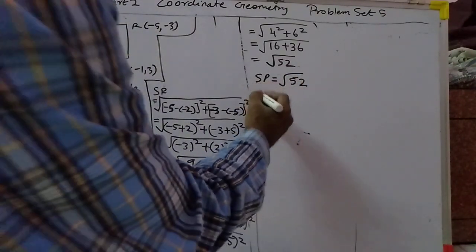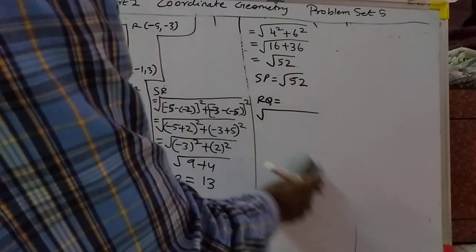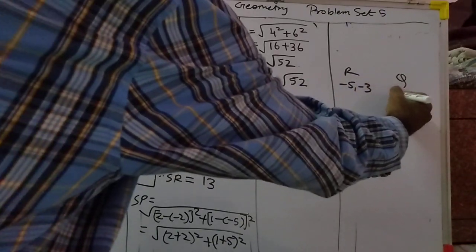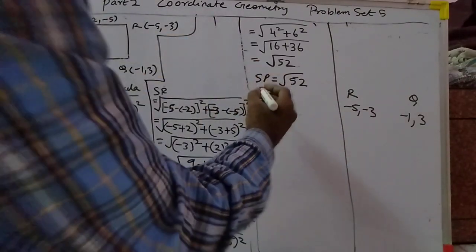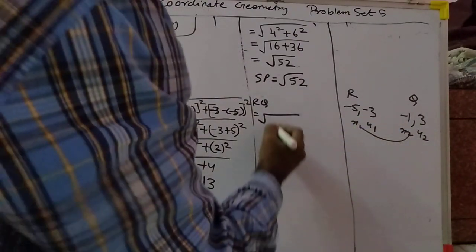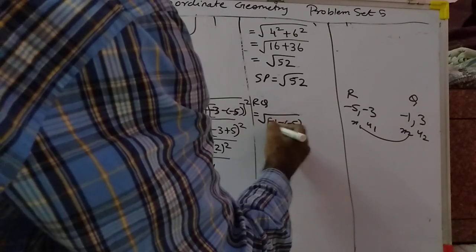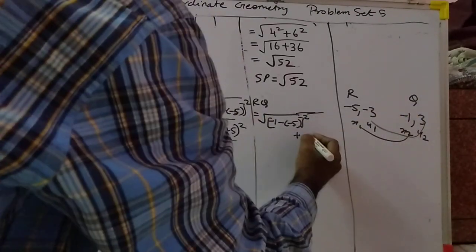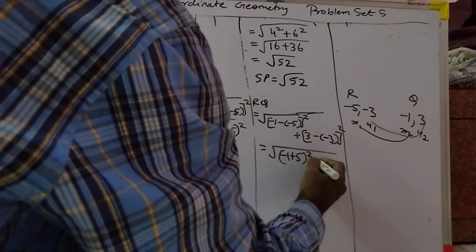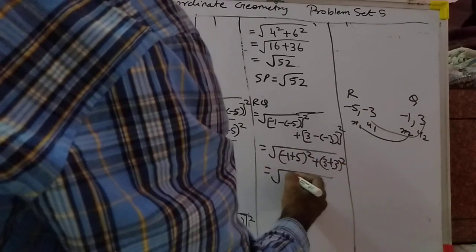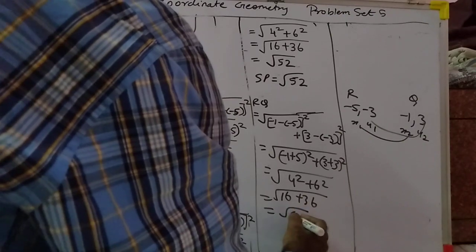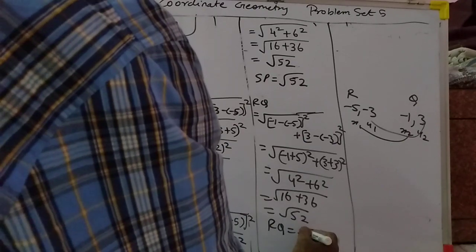We have done SP. Let us calculate for RQ. That will become minus 1 minus of minus 5, the whole square, plus 3 minus of minus 3, the whole square. So that will become minus 1 plus 5, whole square, plus 3 plus 3, whole square — that is 4 squared plus 6 squared, so that is equal to root 52. RQ is equal to root 52.